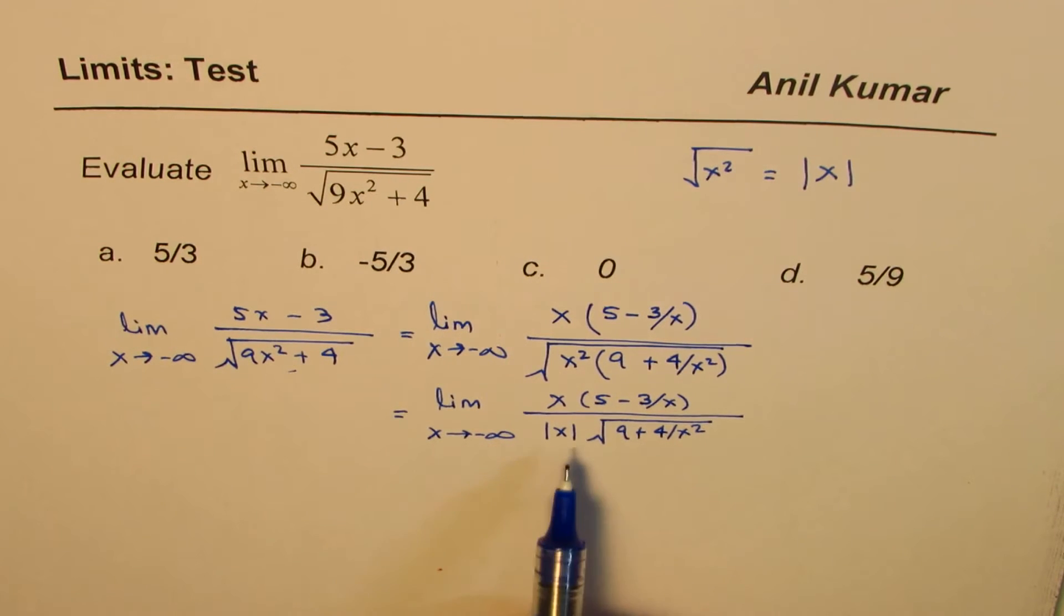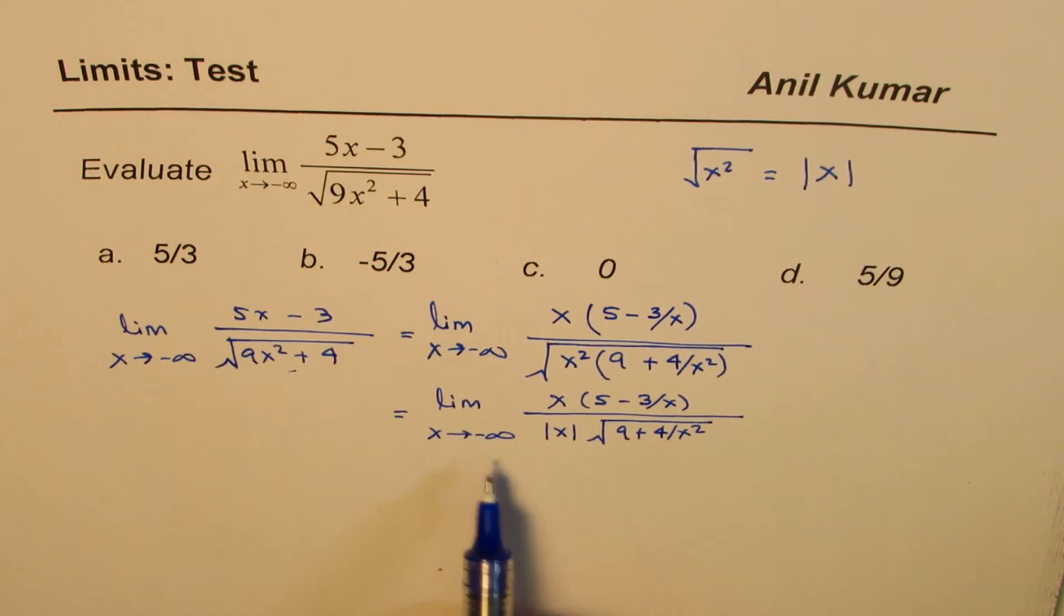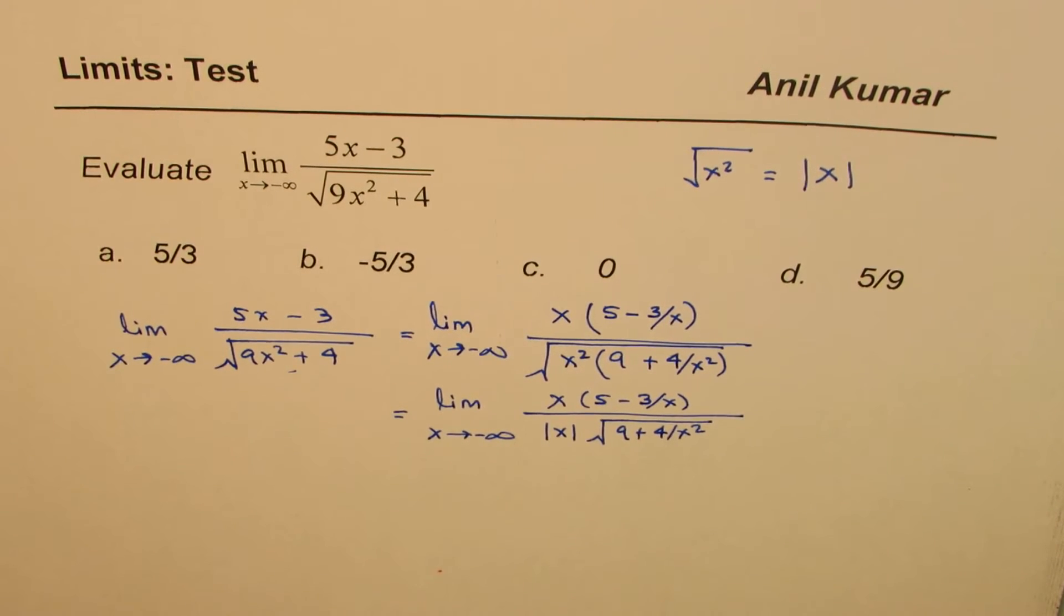Now, the question is, if x is approaching negative infinity, what happens to each component? If x is approaching minus infinity, let's do it on the side.